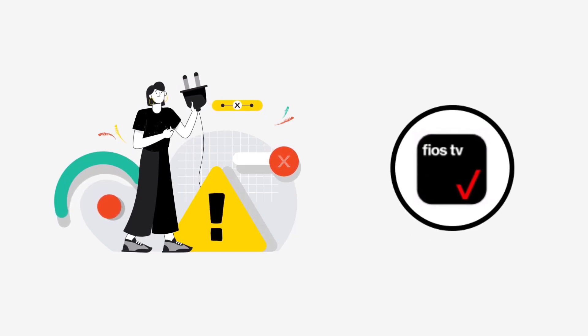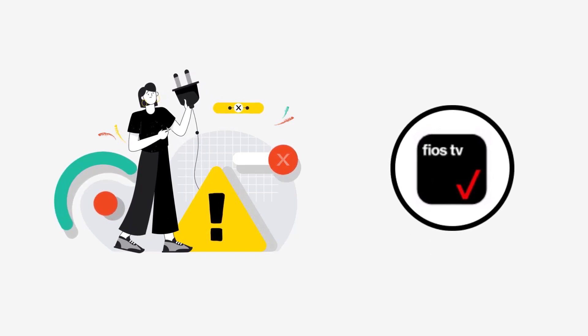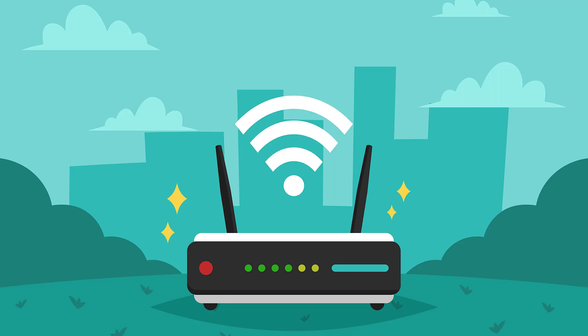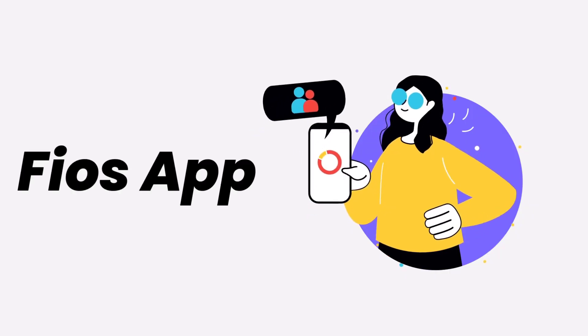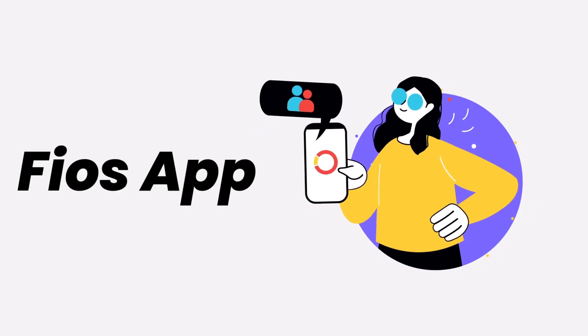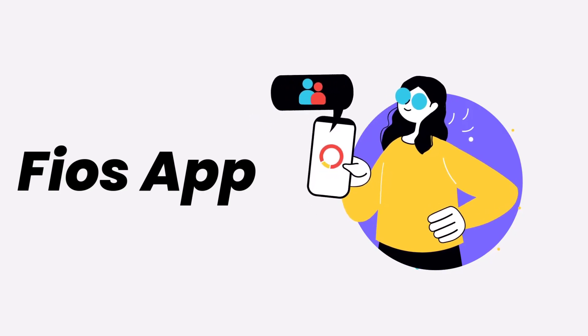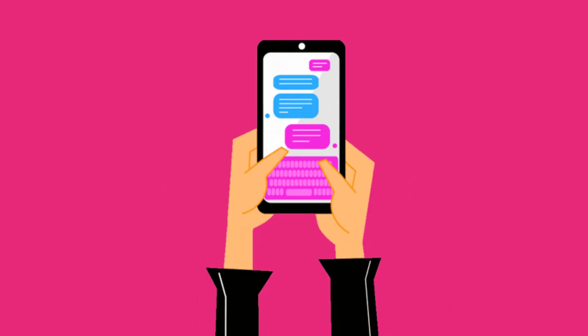It might be possible that you're not able to log into the Fios mobile app due to a connectivity issue. First of all, you need to make sure you have a strong and stable internet connection. To do so, do a quick test to check if your internet's working — simply open up an app that runs on internet other than the Fios mobile app and check if it's working or not.